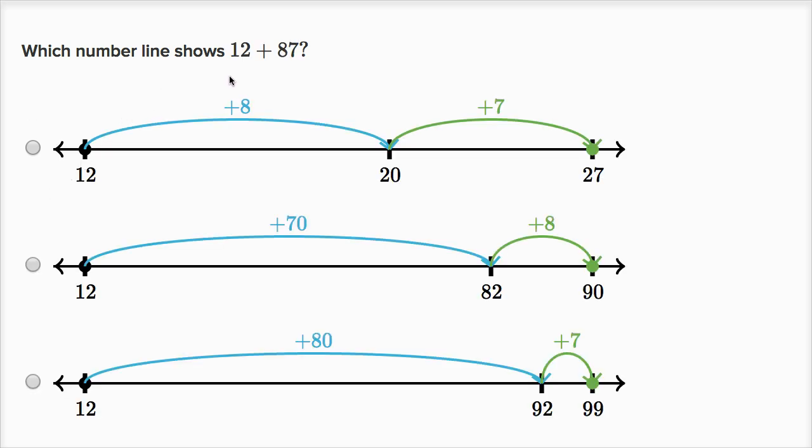Which number line shows 12 plus 87? So all of these start off at 12, and we're going to want to add 80 and then add seven. Eight tens and seven ones. And let's see, this one adds 80, and then we add seven. So yep, feel good about that one right over there.